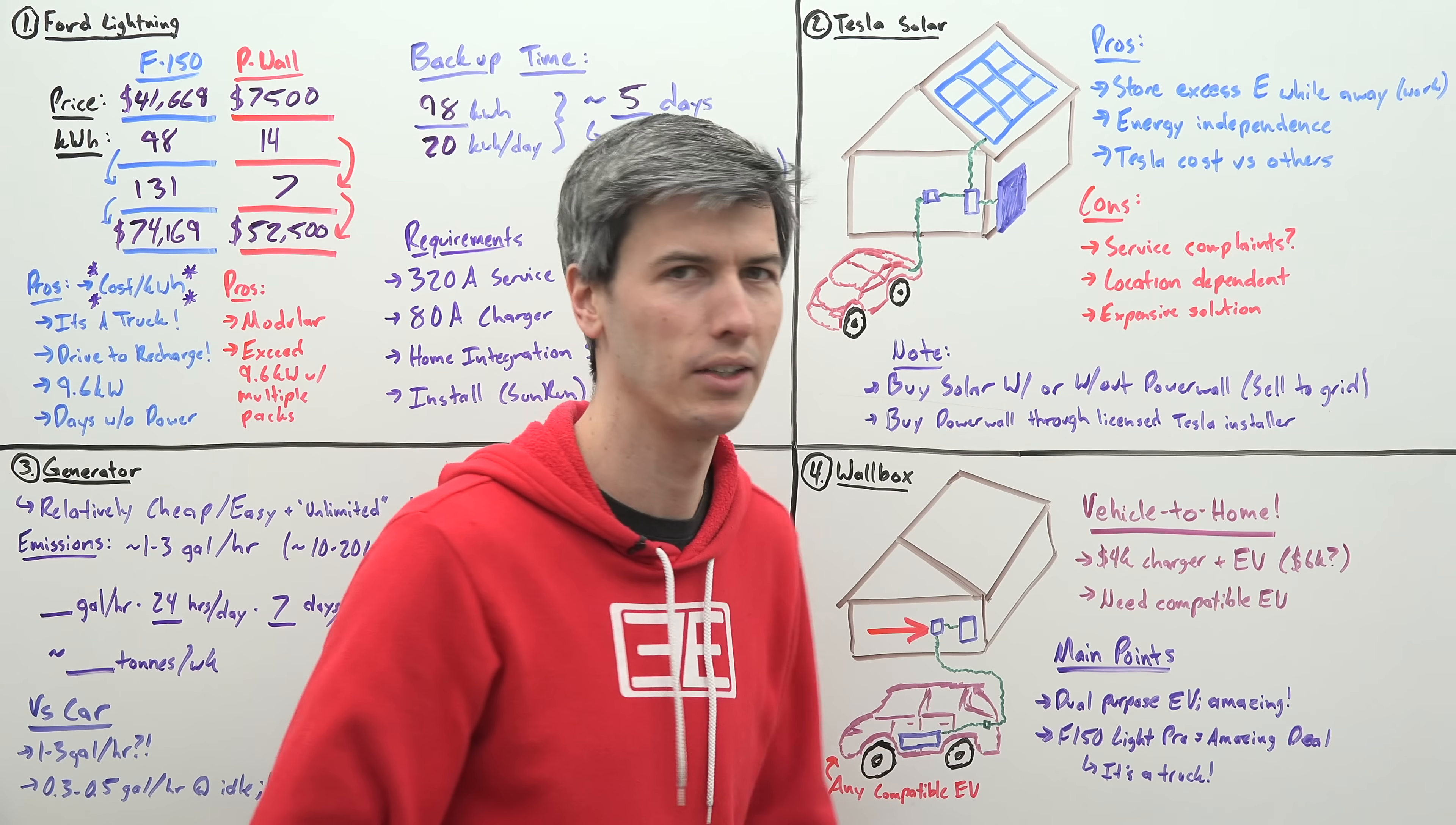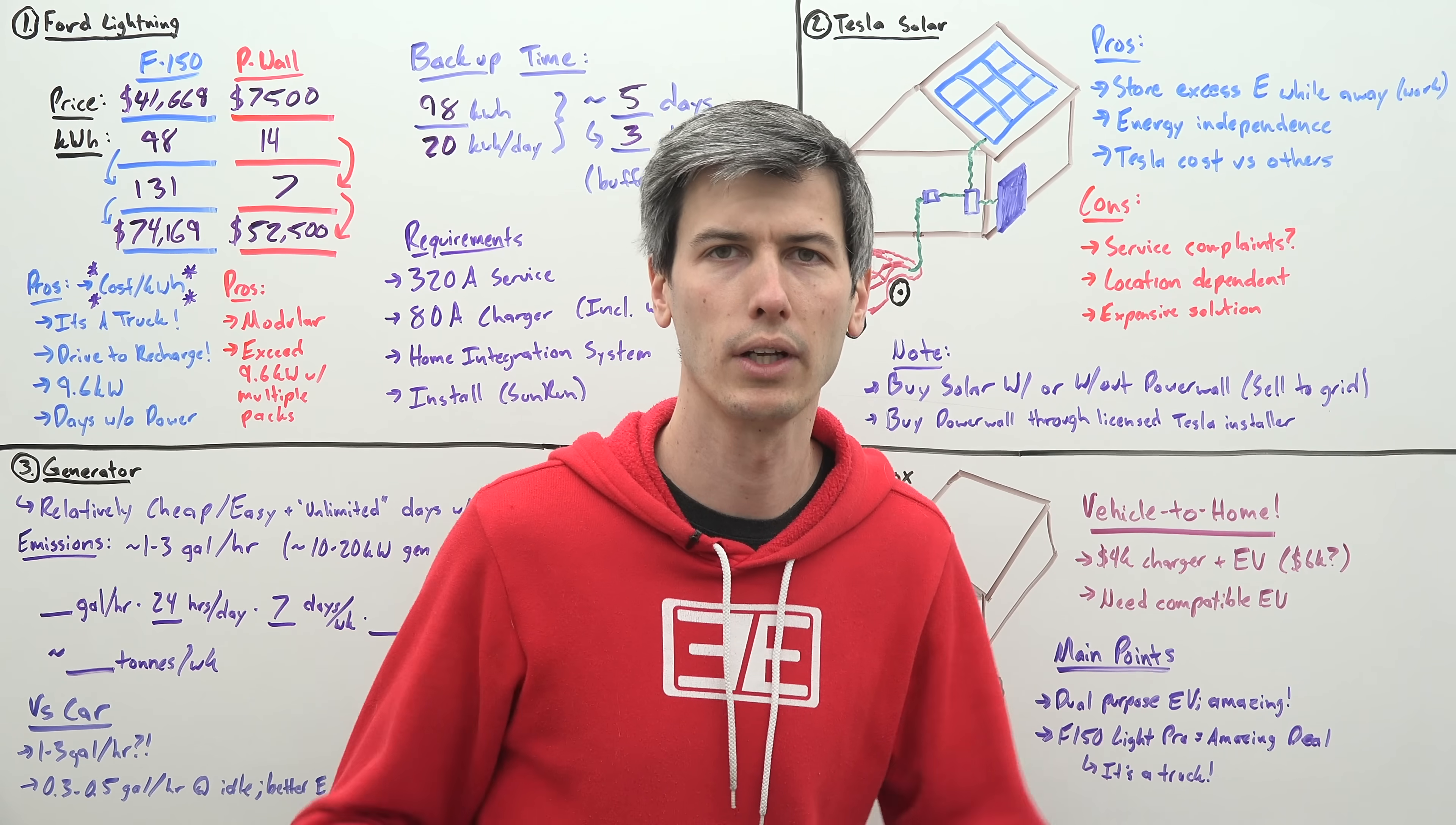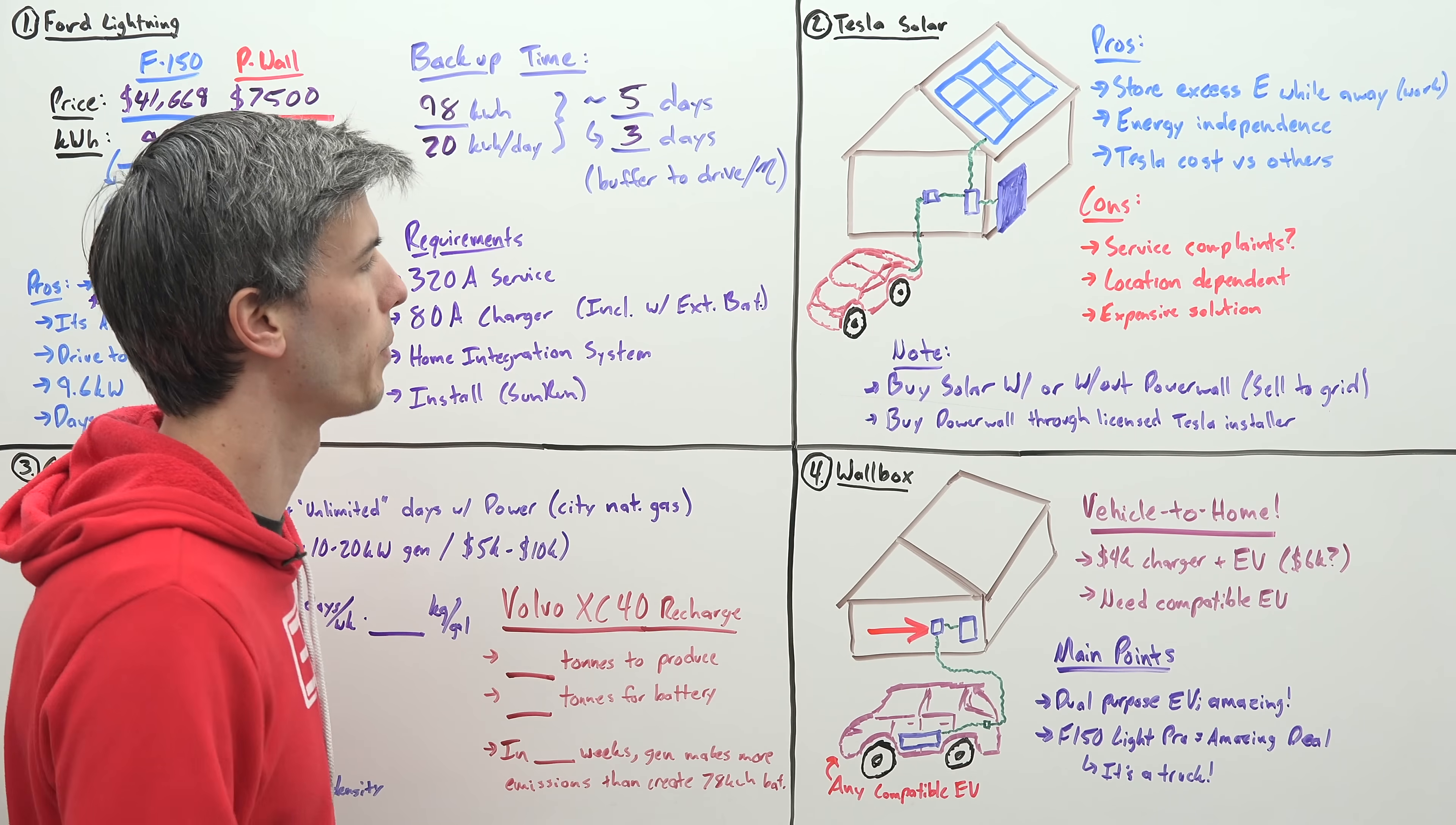Also, it's location dependent. Not everyone has tons of sun all year round. And then also it is expensive. If you're looking at putting in one of these systems, it's probably going to be in the $30,000 to $50,000 range. Again, before incentives. Incentives can bring that down dramatically. But it is an expensive solution.